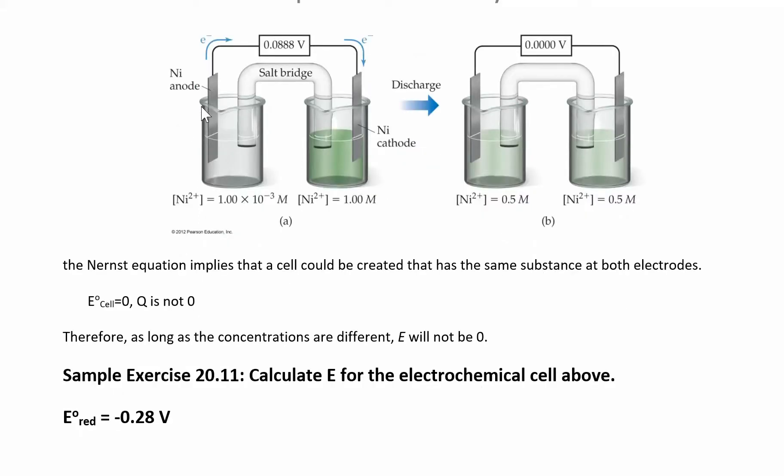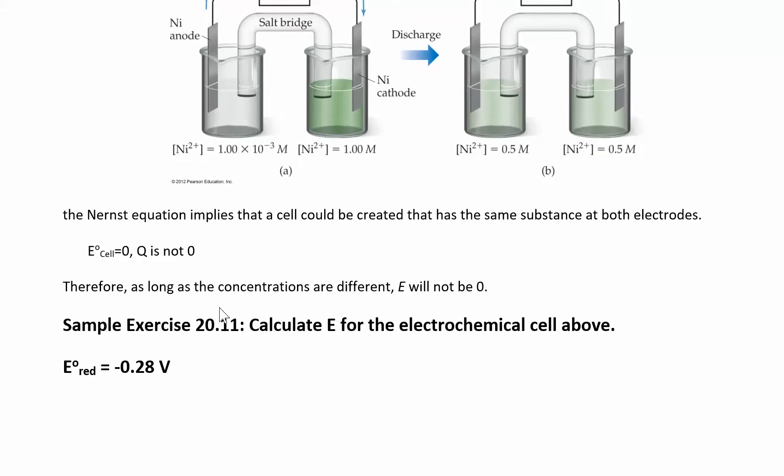But the electrode does have the same reduction potential. But because you have this difference in concentration, Q will have a number. And so when you look back at the Nernst equation, you had your Ecell equals E°cell minus 0.0592 over n times the log Q. So because of this part of the equation, right over here on this side, this will be zero, but this will have some kind of number.